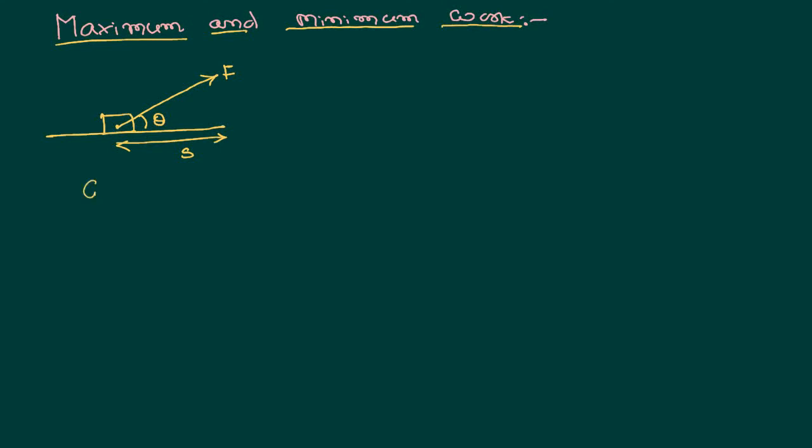We know that work done is defined as the dot product of force and displacement. This can be further expressed as work done equals Fs cos theta.